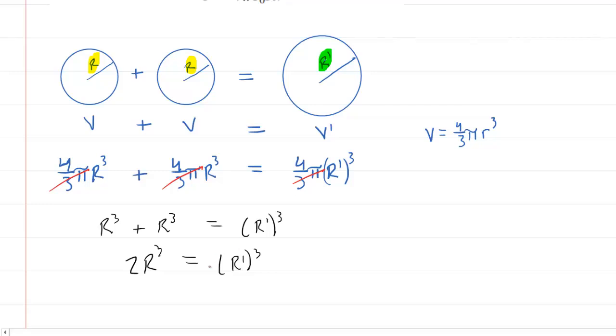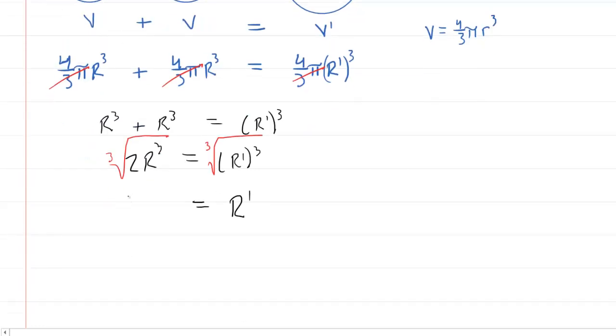To finish solving for r prime, we're going to take the cube root of both sides of this equation. So, on the right side, the cube root and the cube will cancel, leaving us with just r prime. On the left side, we would have the cube root of 2 times the cube root of r³.